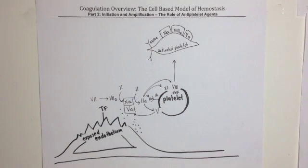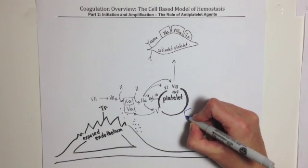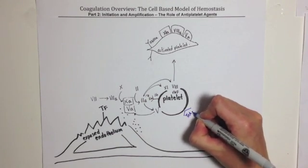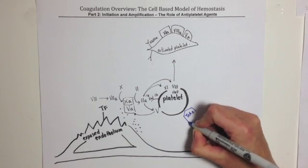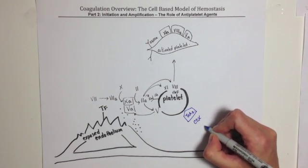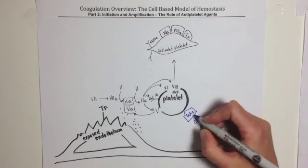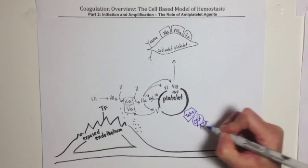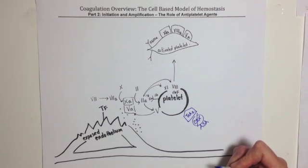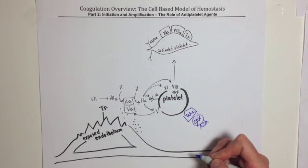Thromboxane A2 is a cell signal mediator that activates platelets. Thromboxane A2 is produced by the enzyme cyclooxygenase. And administering aspirin, a cornerstone therapy of acute coronary syndrome, inhibits this production of cyclooxygenase, thus inhibits platelet activation by inhibiting the production of thromboxane A2.